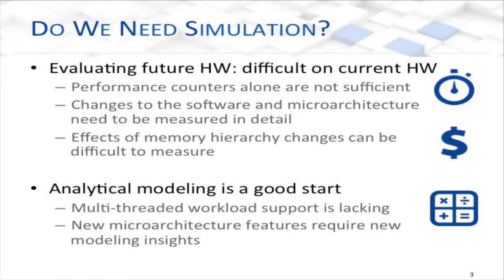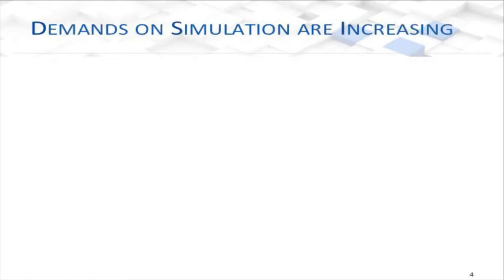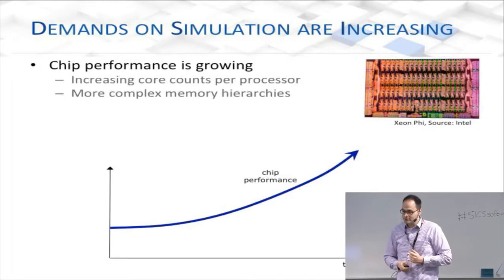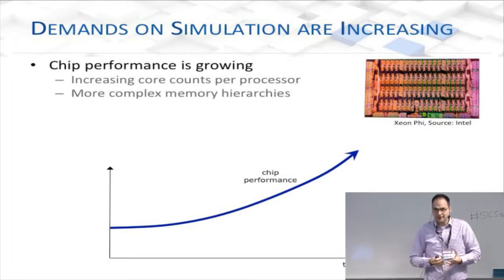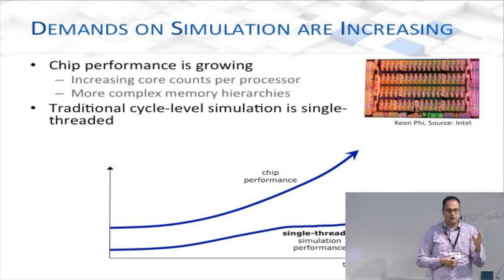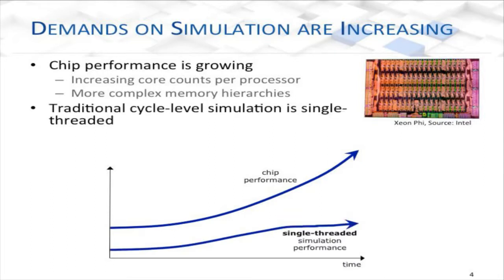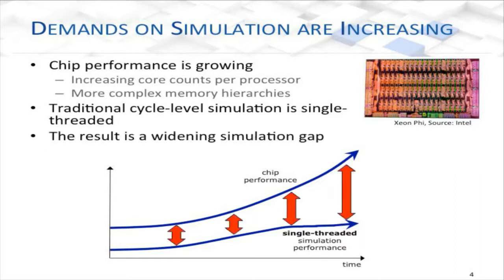We have these multi-core systems with large numbers of cores, multi-threaded applications like OpenMP or OpenCL, and chip performance that's growing with larger numbers of cores. But simulation itself — we want detailed analysis of our application and our microarchitecture — traditional simulation is single-threaded. It's not scaling with your multi-core processor. So there's this ever-growing gap: if you don't have a multi-threaded simulator, how do you solve this gap?